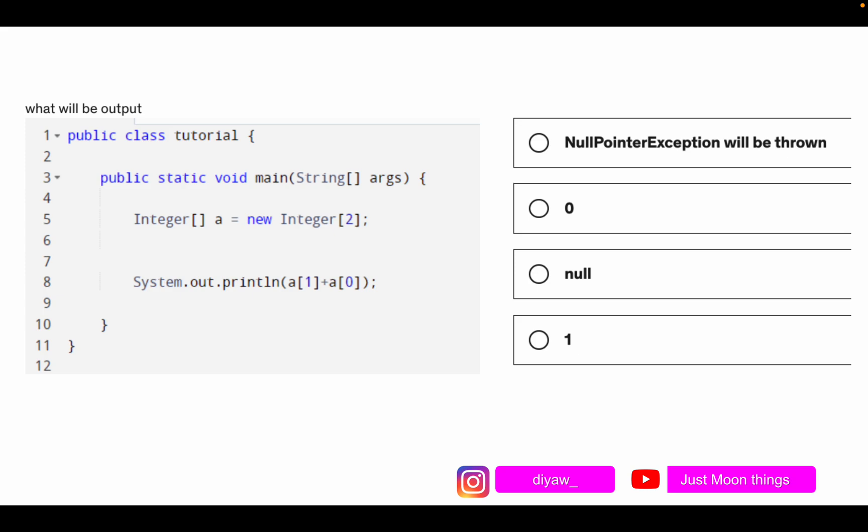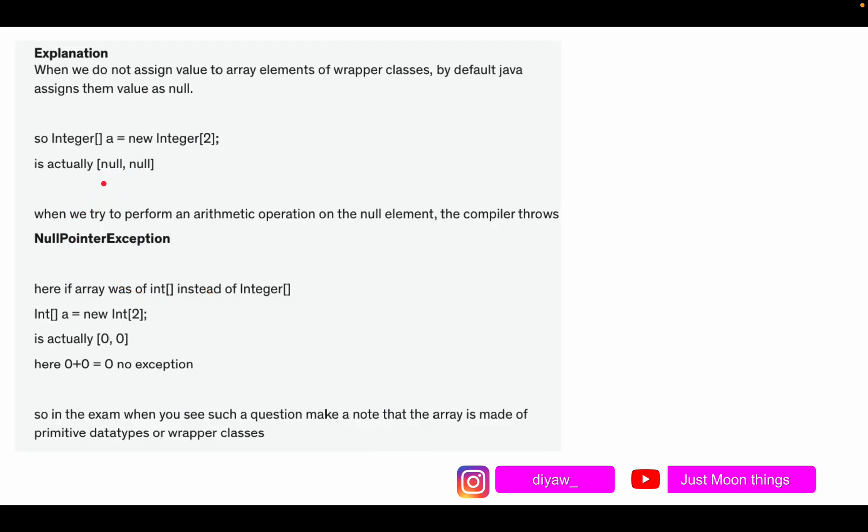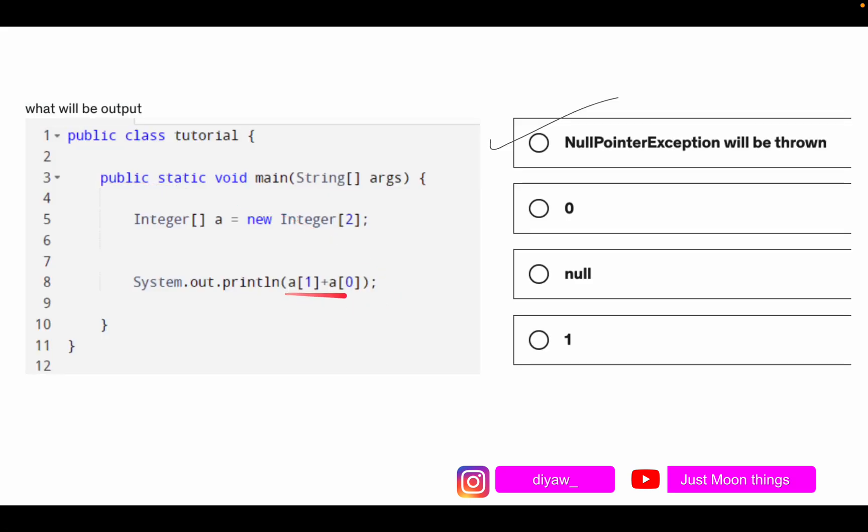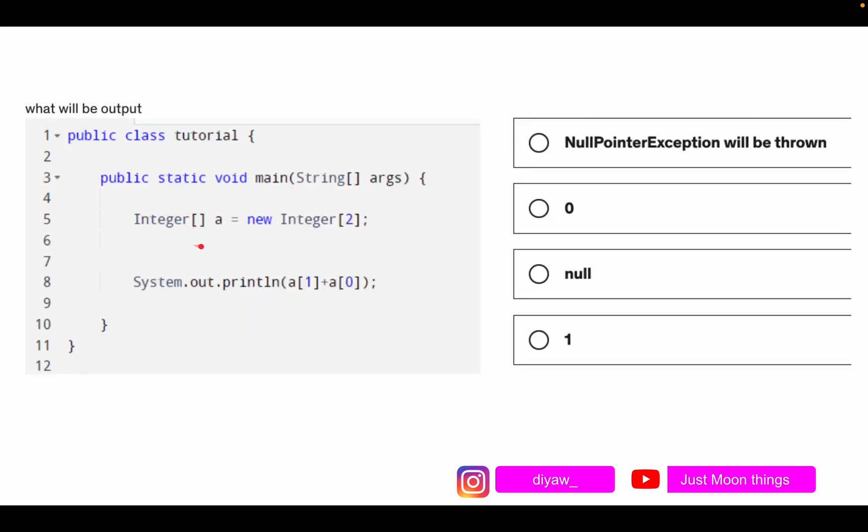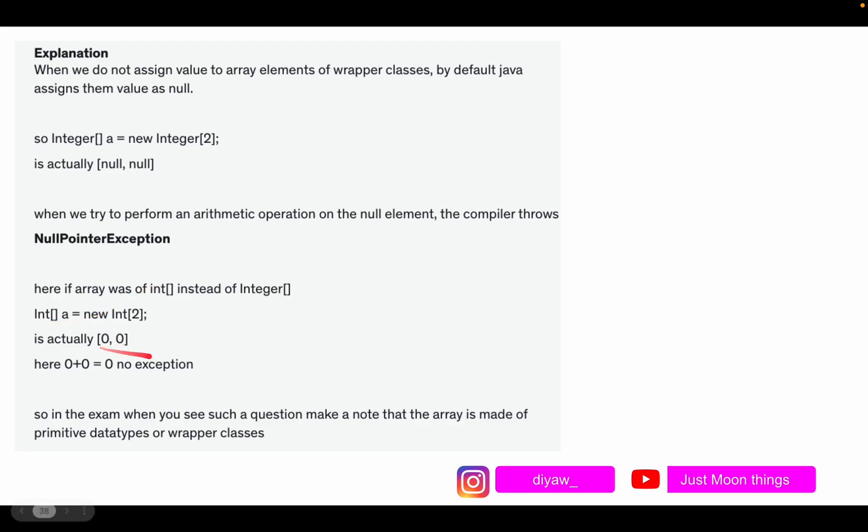Since it's a wrapper class, Java will assign primitive value. The primitive value in this case is null. Just remember that all wrapper classes have primitive value null for them. So in this case this will be null comma null. So when we will try to add it, it will throw a null pointer exception because we cannot add null.